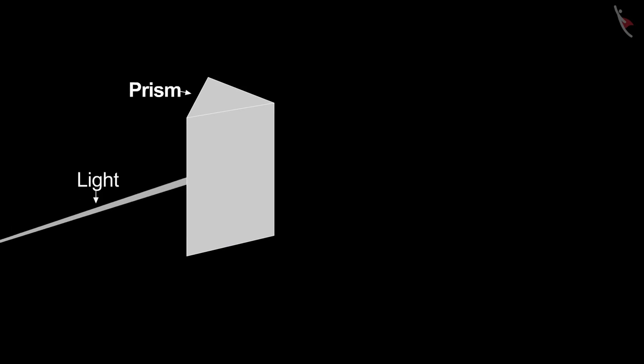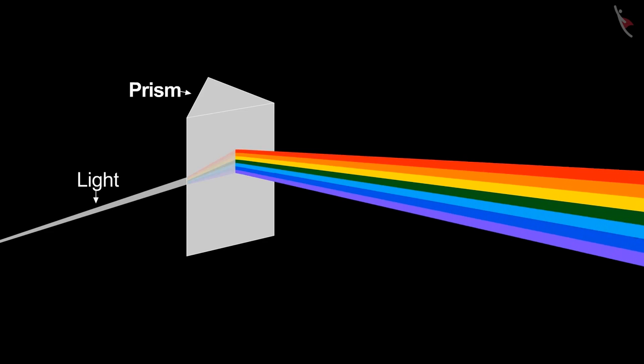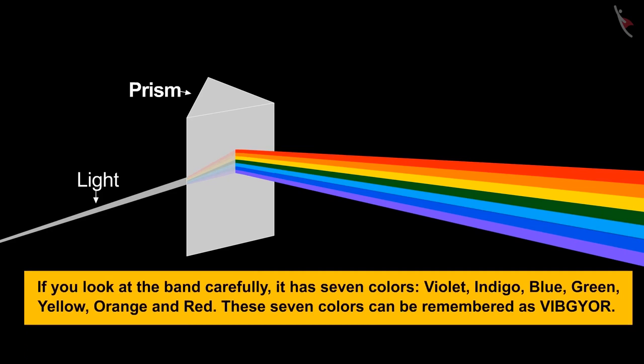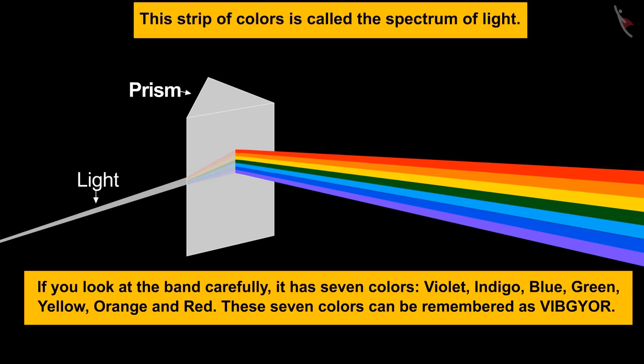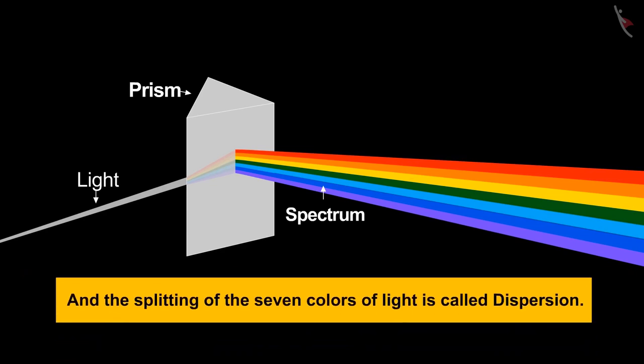As soon as the light falls on the prism, on the other side we will see a band of colors. If you look at the band carefully, it has seven colors: violet, indigo, blue, green, yellow, orange, and red. These seven colors can be remembered as VIBGYOR. This strip of colors is called the spectrum of light, and the splitting of white light into seven colors is called dispersion.